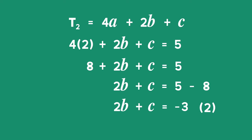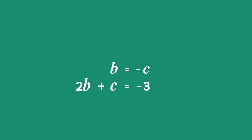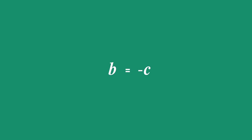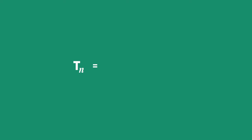Now that we have two equations, we solve them simultaneously. Substituting equation 1 (b = −c) into equation 2: 2(−c) + c = −3, so −2c + c = −3, giving −c = −3, therefore c = 3. Substituting back into equation 1: b = −c = −3. So our general term for this quadratic sequence is Tn = 2n² − 3n + 3.